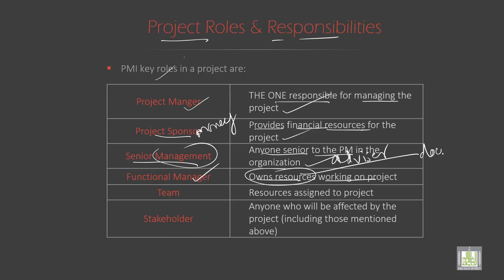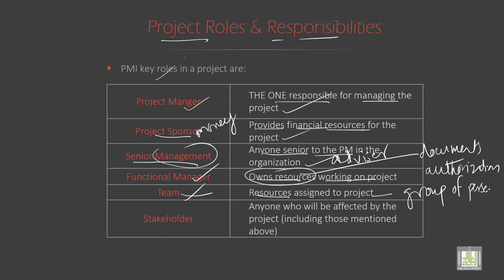The functional manager owns the resources working on the project. He has all the important documents and authorizations related to the resources. Then the team — a group of persons where the resources are assigned to the project — a group of engineers working on the project.